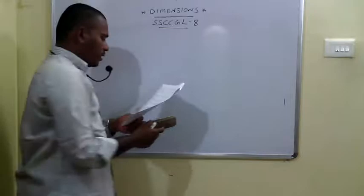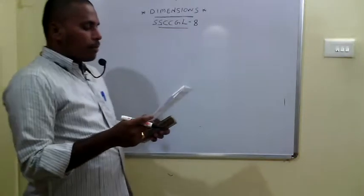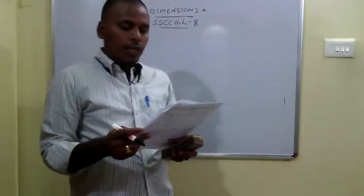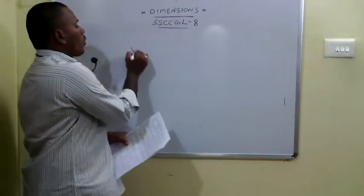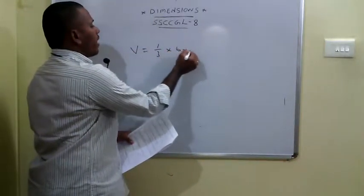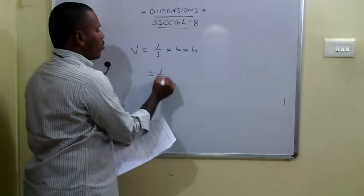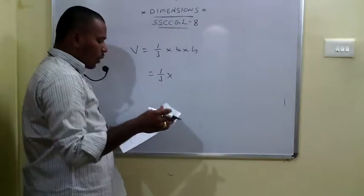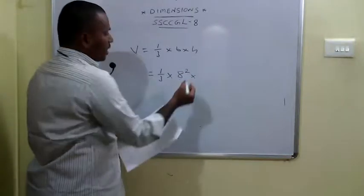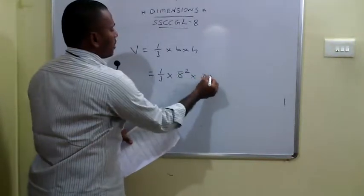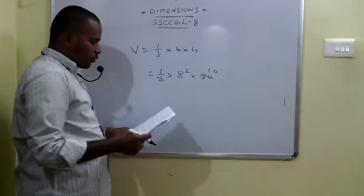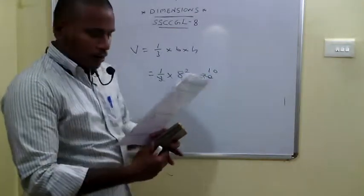The 63rd problem: a regular square pyramid has a base of side 8 centimeters and height 30 centimeters. Volume equals 1 by 3 into base area into height. Base area is 8 squared equals 64. So volume is 1 by 3 into 64 into 30 equals 640 cubic centimeters.